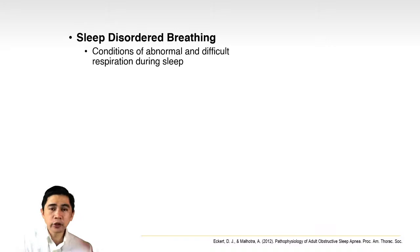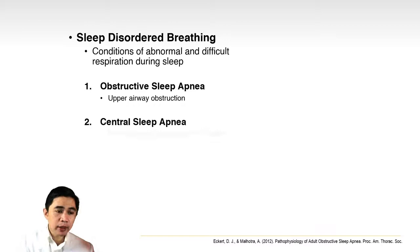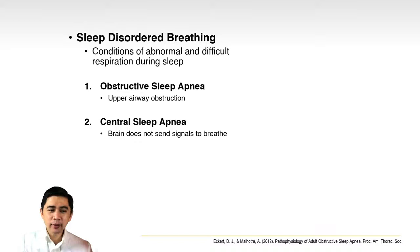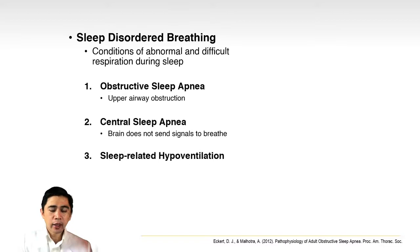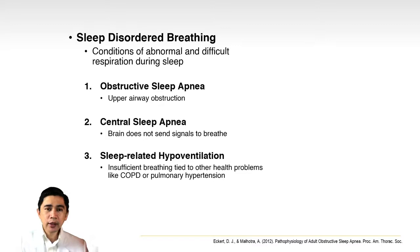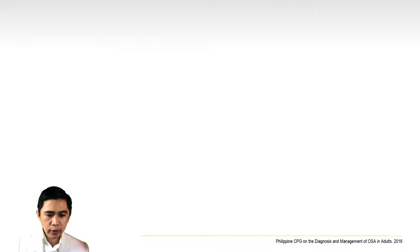Sleep-disordered breathing refers to conditions of abnormal and difficult respiration during sleep. The first type is obstructive sleep apnea, caused by upper airway obstruction. The second is central sleep apnea, where the brain does not send a signal to breathe — typical in narcotic overdose causing hypoventilation. We also have sleep-related hypoventilation, usually due to other health problems like COPD or pulmonary hypertension. These are less common than obstructive sleep apnea.